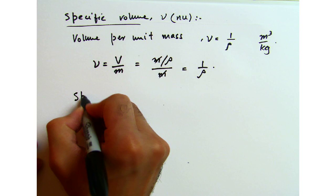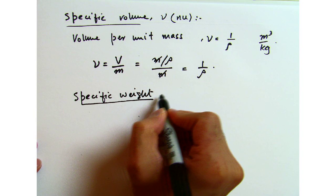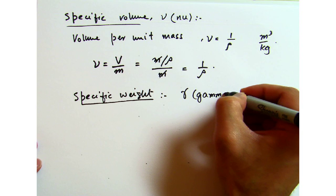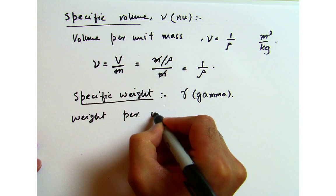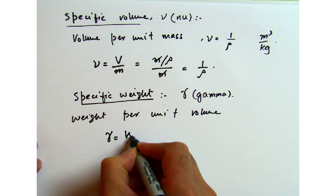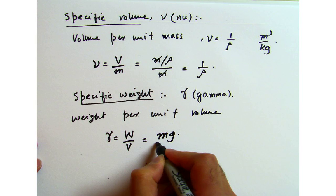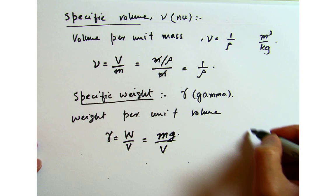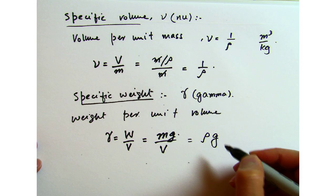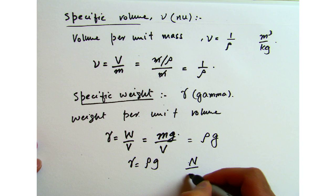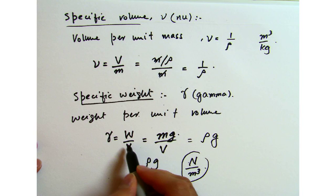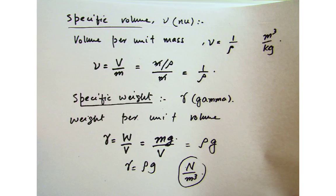Now we have the specific weight, which is usually represented with the Greek letter gamma. It is defined as weight per unit volume. Gamma equals weight over volume. Since we know density equals mass over volume, we can replace the mass-over-volume quantity with rho, and weight equals mass times g. So gamma equals rho times g. The units of specific weight are Newtons per meter cubed in SI.